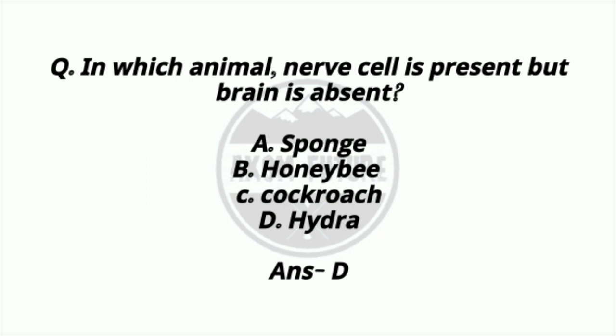Question 2: In which animal is a nerve cell present but a brain is absent? Option A: sponge. Option B: honey bee. Option C: cockroach. Option D: hydra. The answer is option D, hydra.